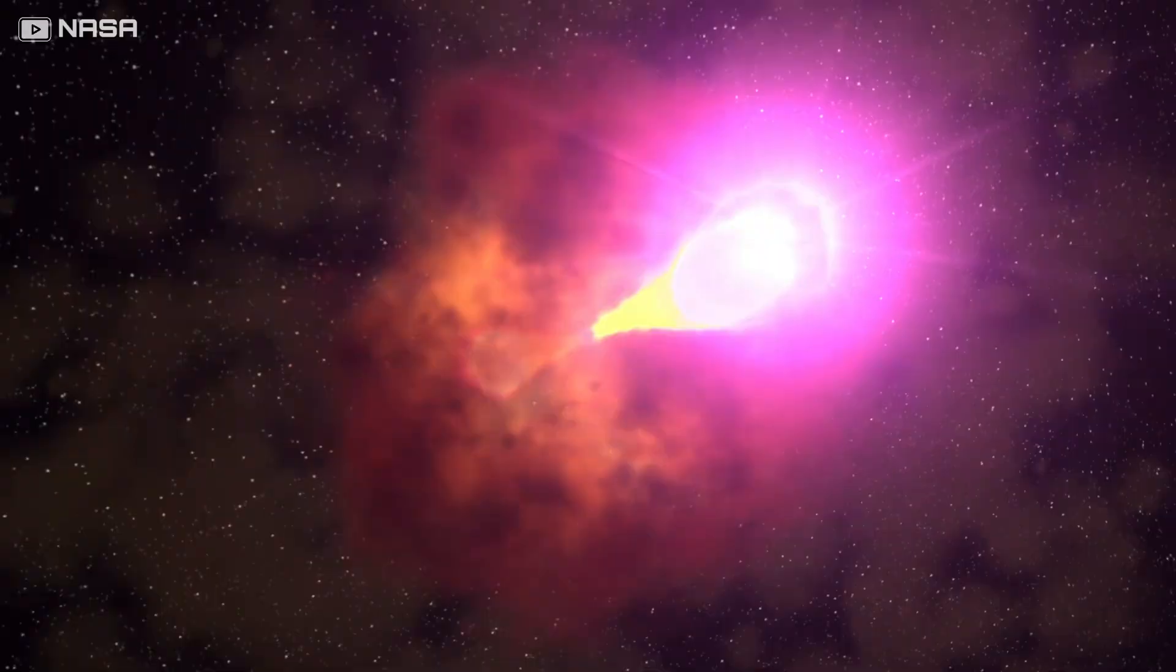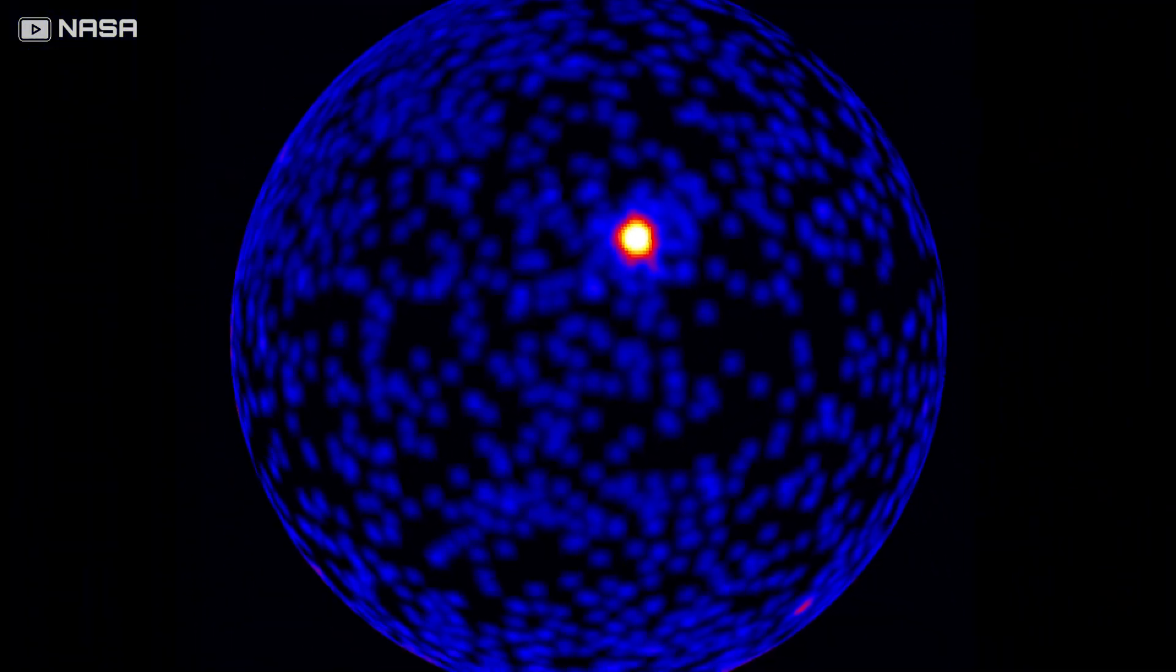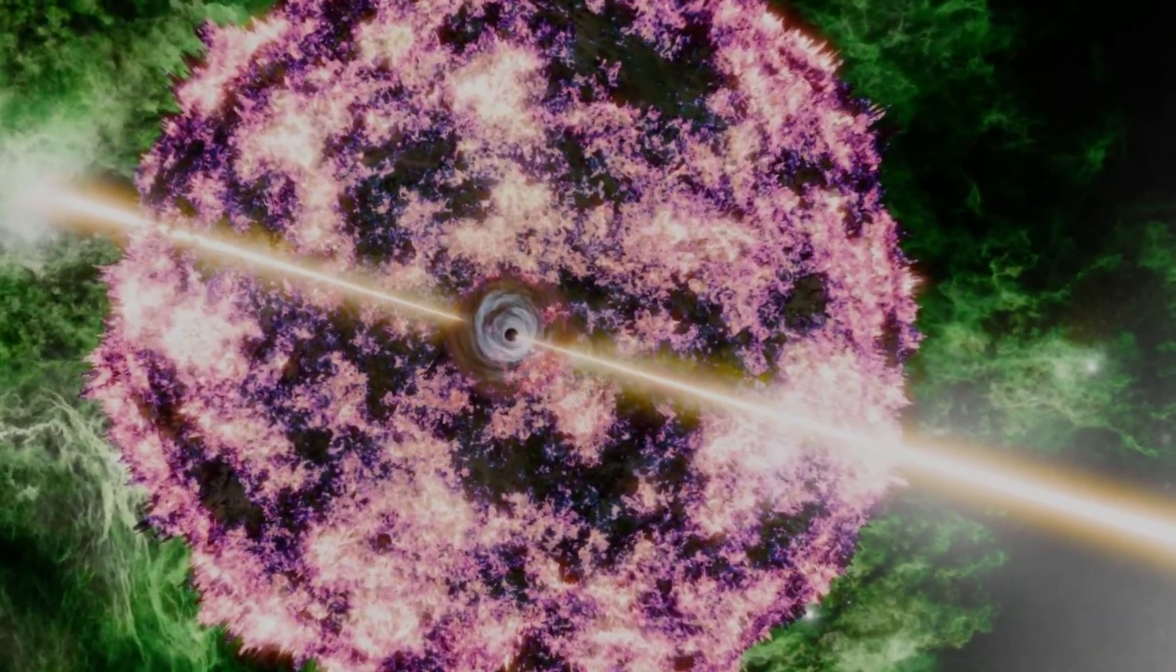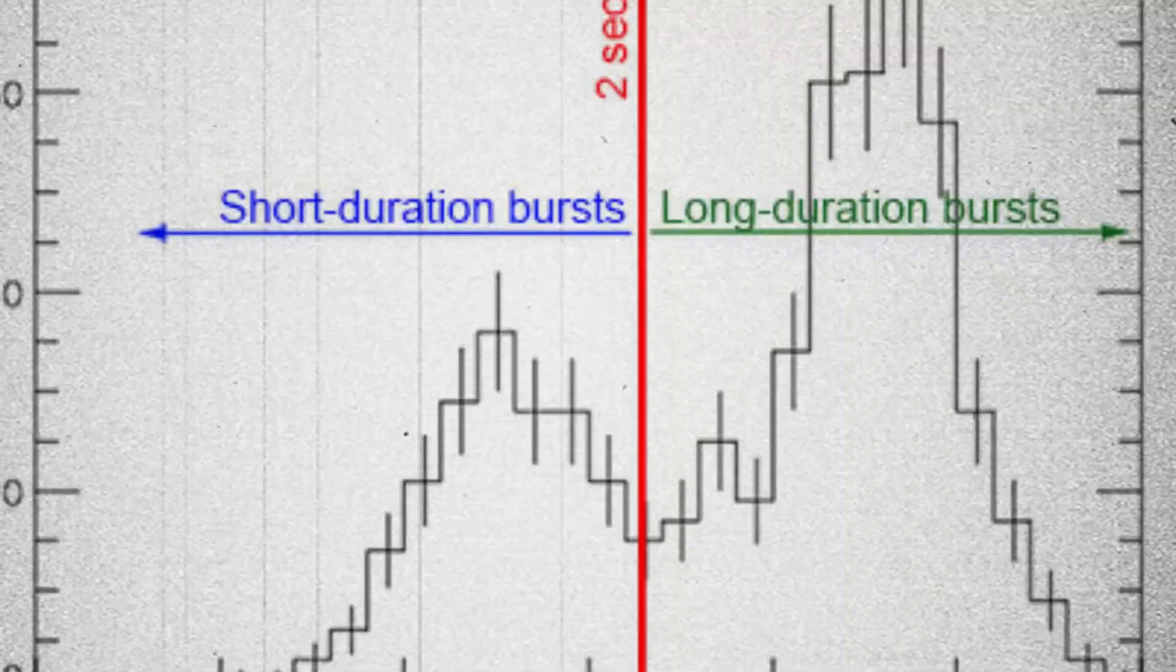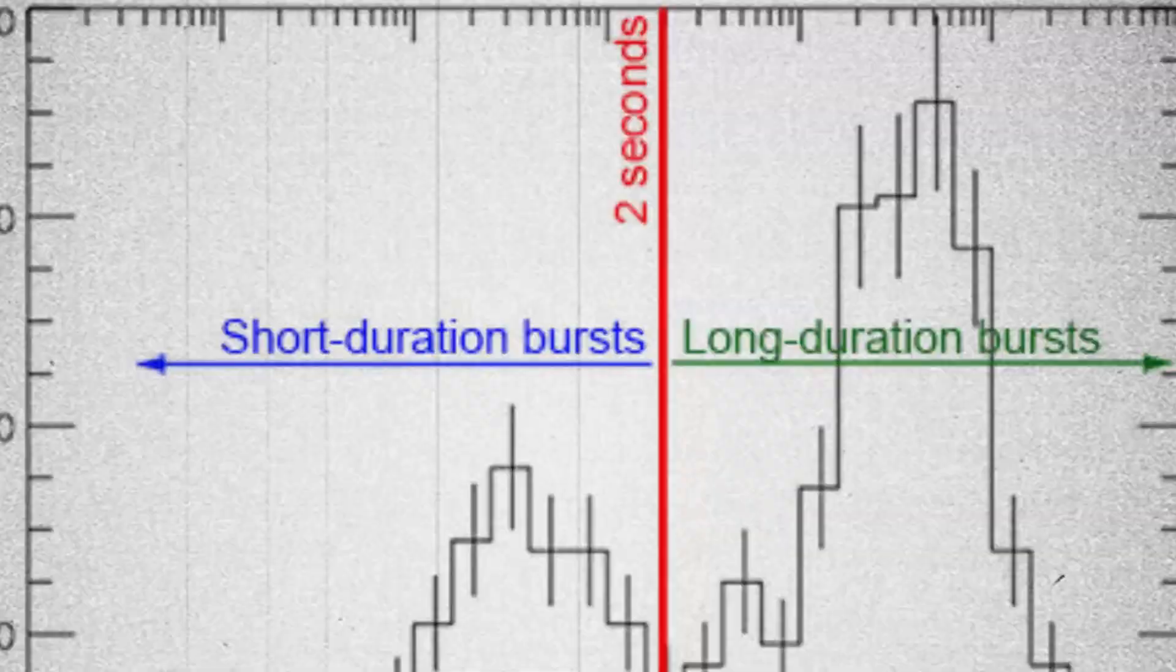If one of those jets ever pointed at Earth, it would be the last sunrise in history. We call those events gamma-ray bursts. They're second only to the Big Bang in raw energy output. The long ones last maybe 30 seconds. The short ones end before you can blink.